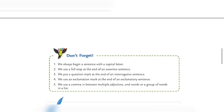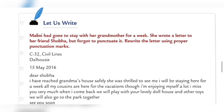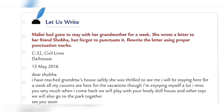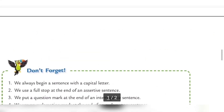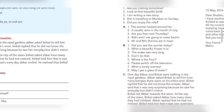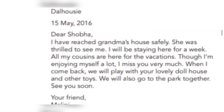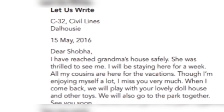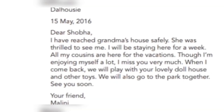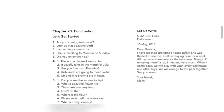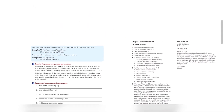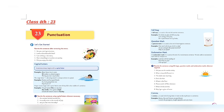Now exercise E is finished. Malini has gone to stay with her grandmother for a week. She wrote a letter to her friend Shobha but forgot to punctuate it. You have to punctuate the letter — check where capital letters and commas are used, then do the punctuation according to the given answer. Here we finish the chapter. In the next class we will talk on chapter number 24. Thank you.